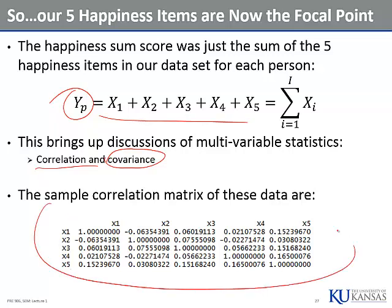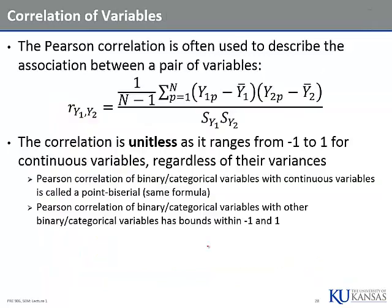Here is a correlation matrix for our five items. Correlations are somewhat low — we have some 0.15s, and some that are a little bit negative. They're very small.